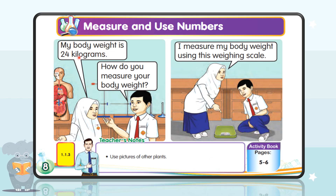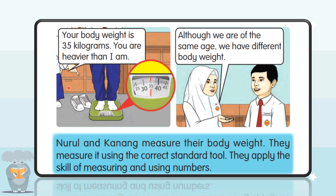My body weight is 34kg. How do you measure your body weight? I measure my body weight using this weighing scale. Your body weight is 35kg. You are heavier than I am.